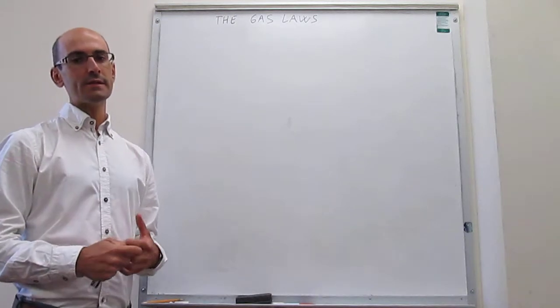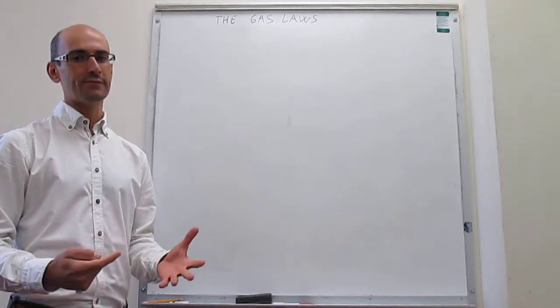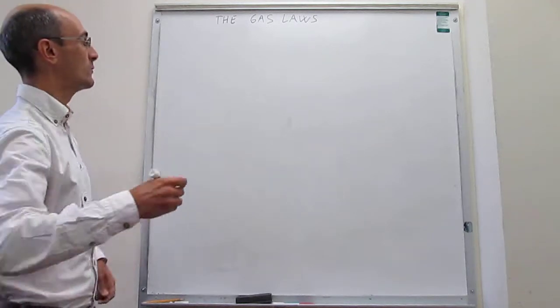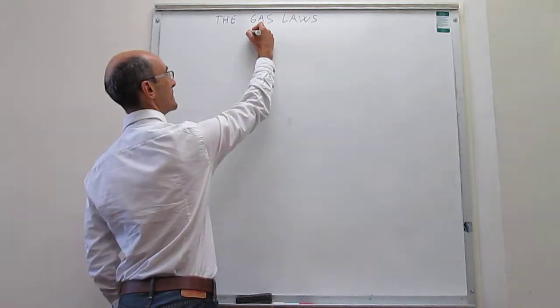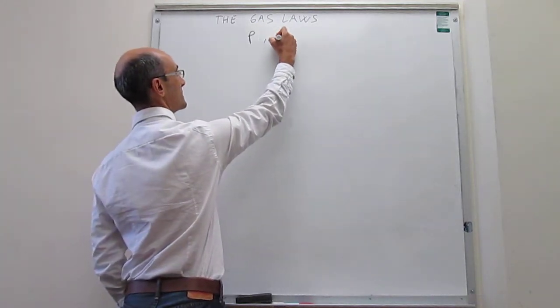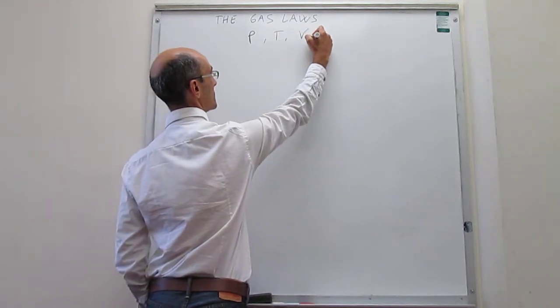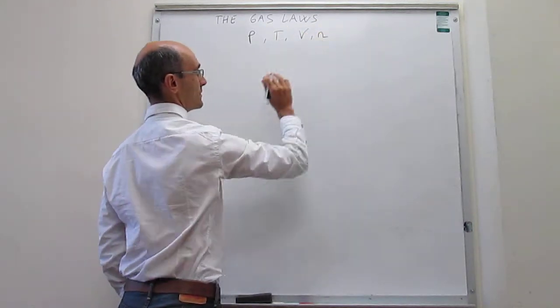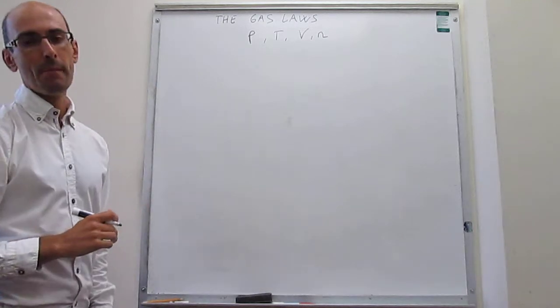Now, it turns out that to specify completely the state of a gas, we need to specify the following quantities: We need to specify the pressure, the temperature, the volume, and then the amount of gas, which is generally provided by the number of moles.